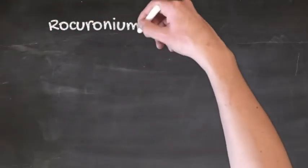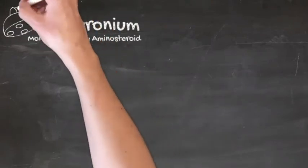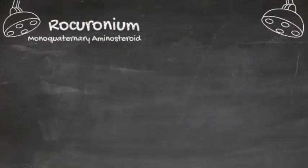Rocuronium is a monoquaternary amino steroid. The reason you'll probably use rocuronium the most often is because it's the only non-depolarising muscle relaxant that you can use for rapid sequence intubation, or RSI.